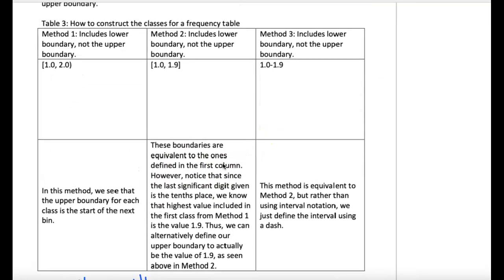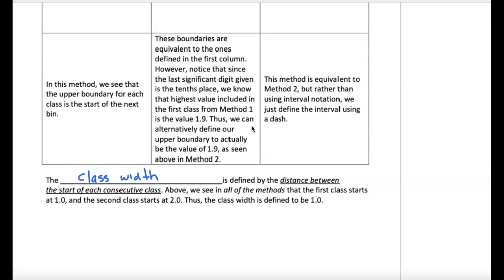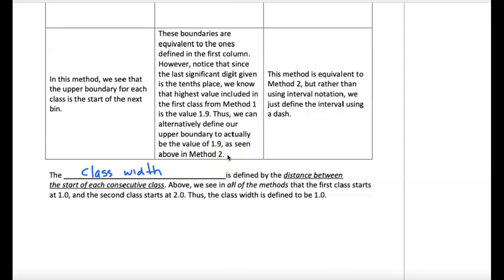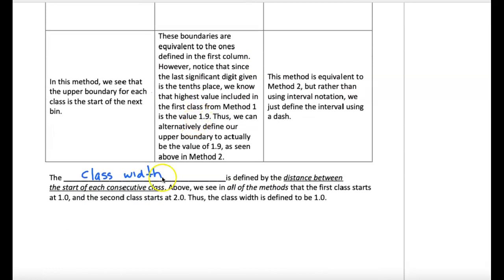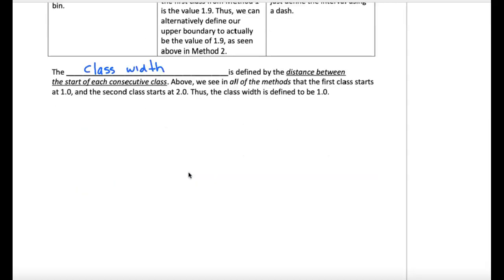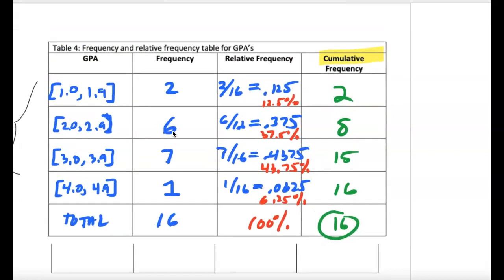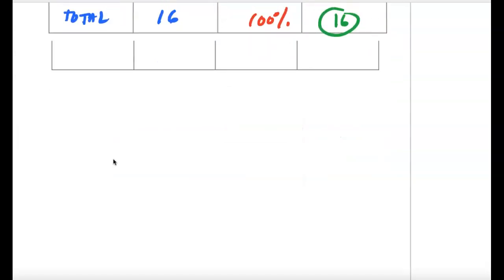And those are the values we use to create what's called the class width - the distance between the start of each class. How big you make these bins or classes actually has an effect on what the table looks like, so there's a strategy or a way you sometimes pick and choose. But we'll use technology to create our tables and displays as we think about that.